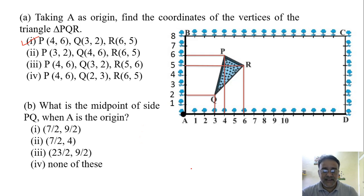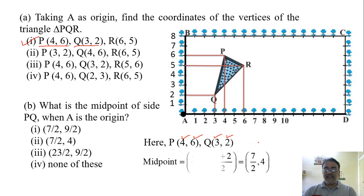Now the next question is what is the midpoint of the side PQ when A is the origin. So when A is the origin the coordinates of P and Q are 4, 6 and 3, 2 that we already got in the first question. And now the midpoint of PQ, the midpoint formula is the x coordinate is given by x1 plus x2 by 2 and y1 plus y2 by 2. So 4 plus 3 by 2 that is 7 by 2 and 6 plus 2 by 2 that is 8 by 2.